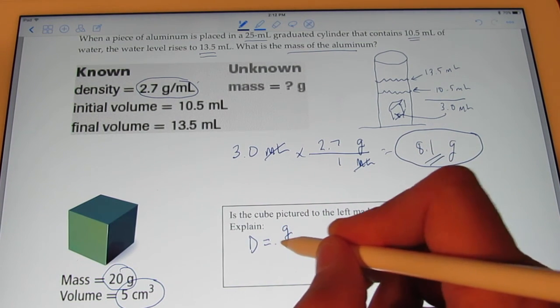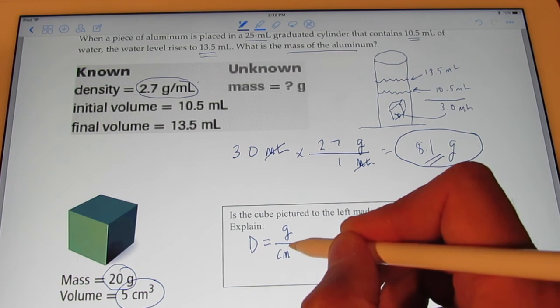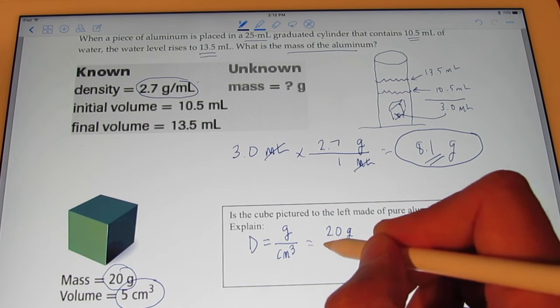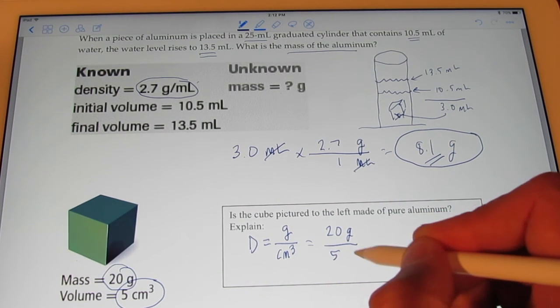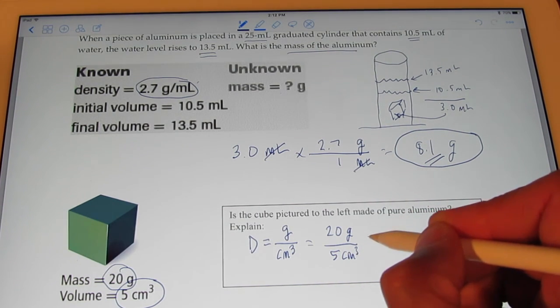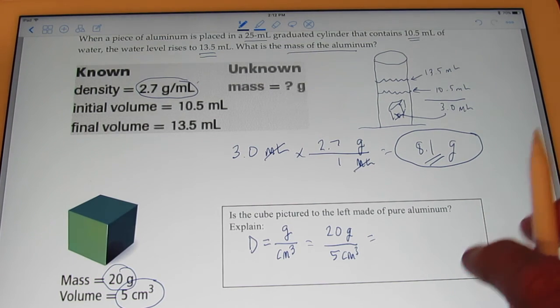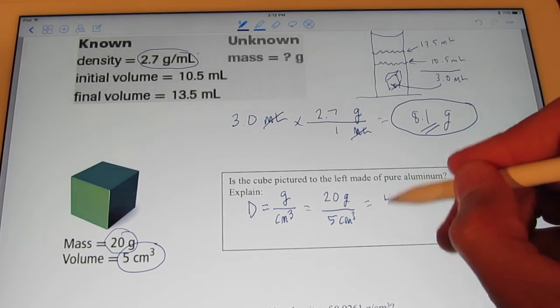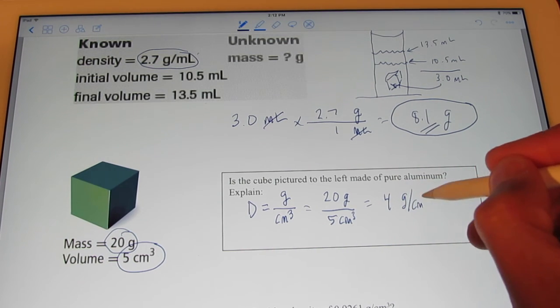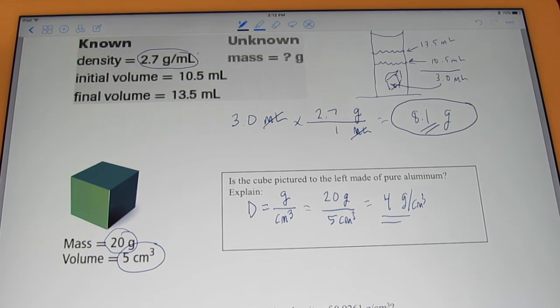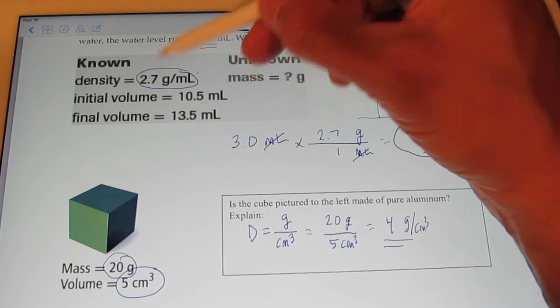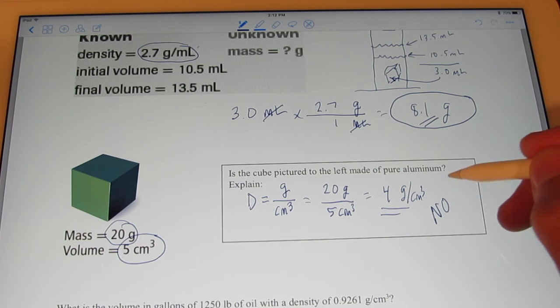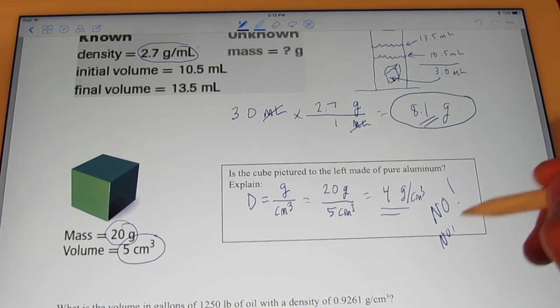So, we're going to take grams divided by cubic centimeters. Mass divided by volume. So, 20 grams divided by 5 cubic centimeters. I don't need my calculator for this one. I'm that good. 20 divided by 5 is 4 grams per cubic centimeter. So, can that be aluminum? Let's see. The density of aluminum is 2.7. The density of this is 4. No! It cannot be aluminum.